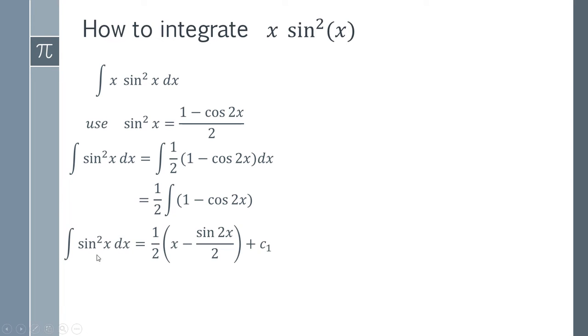So what we're actually doing is we're finding the integral of sine squared x and to do that you just do each term at a time. So the integral of 1 is x and the integral of cos 2x is simply going to be sine 2x over 2.